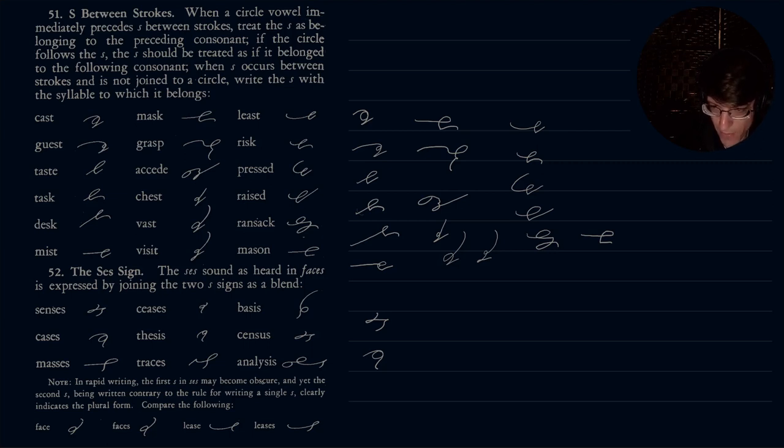So that's cases. Then we have masses. Ceases. Theses. Traces. Bases. So notice, just curve in the opposite direction. Senses. Traces. And analysis. So the note here at the bottom says in rapid writing, the first S in S-E-S may become obscure. And yet, the second S being written contrary to the rule for writing a single S clearly indicates the plural form.